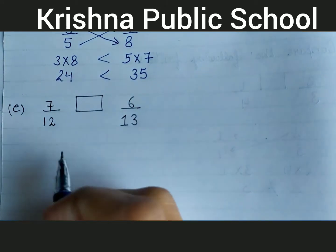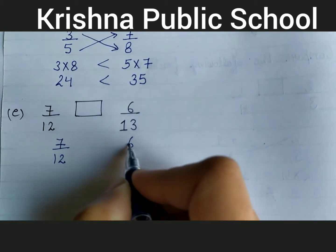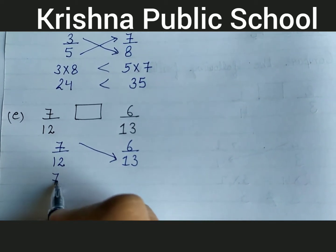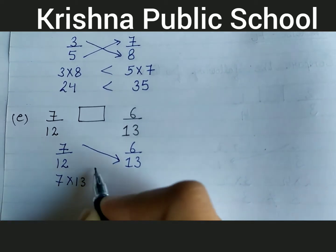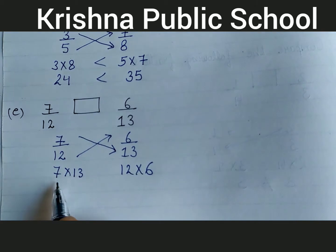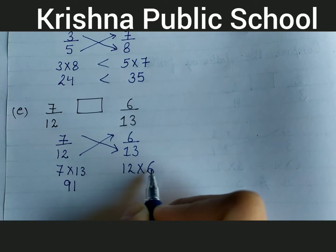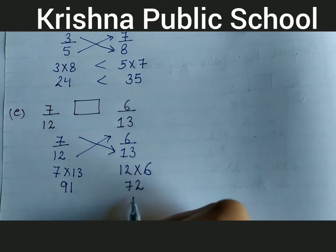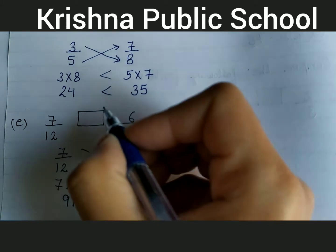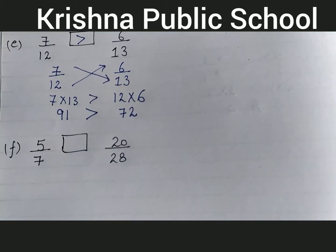Next question: compare 7 upon 12 and 6 upon 13. By cross multiplication: 7 multiply 13, 12 multiply 6. 7 multiply 13 equal to 91, 12 multiply 6 equal to 72. 91 is greater than 72, so your answer is 7 upon 12 is greater than 6 upon 13.